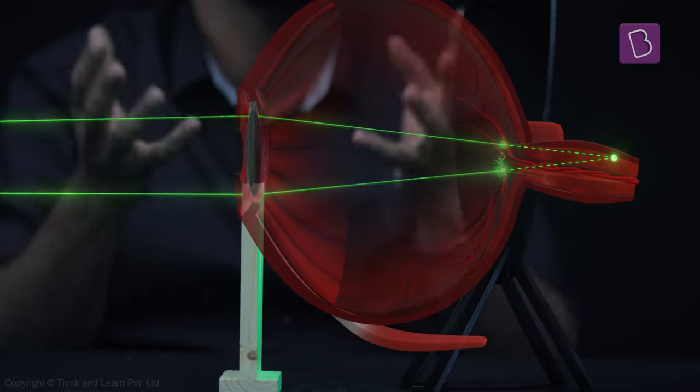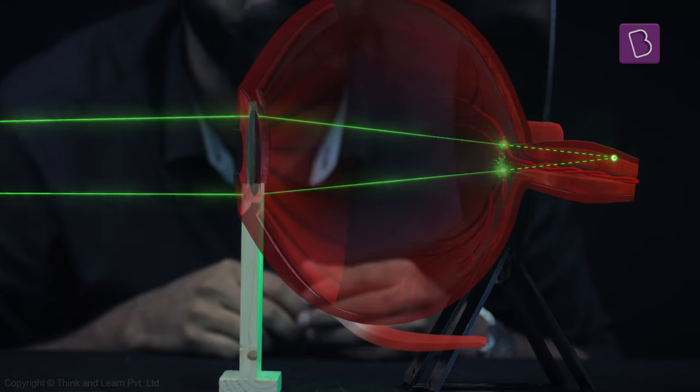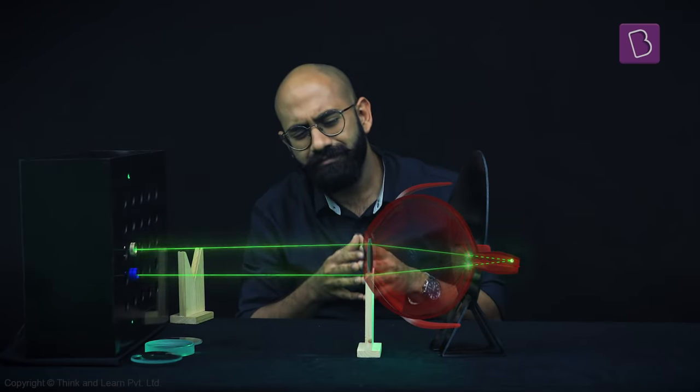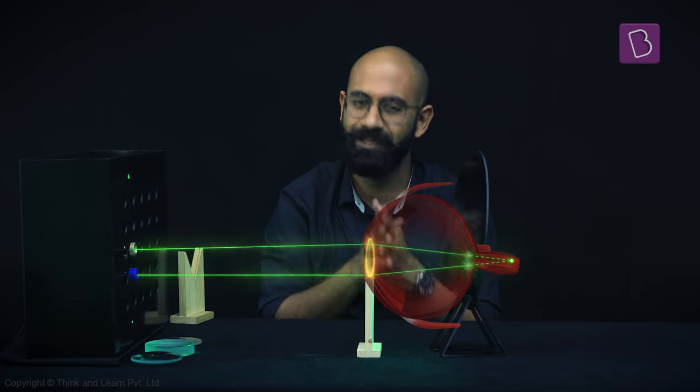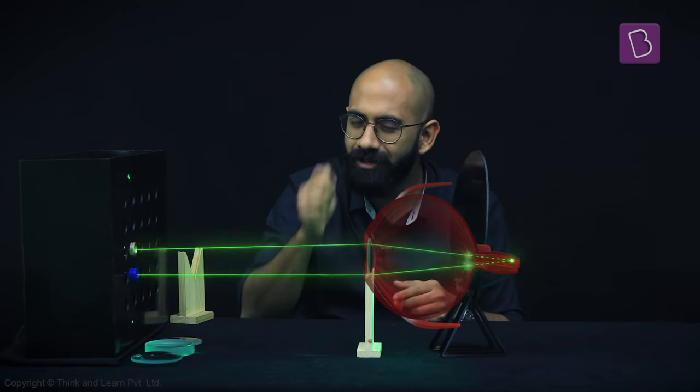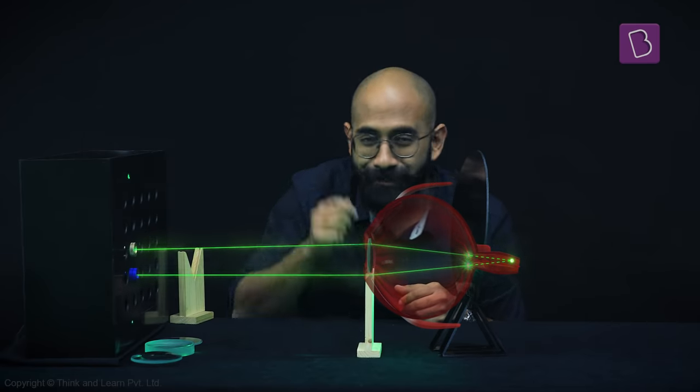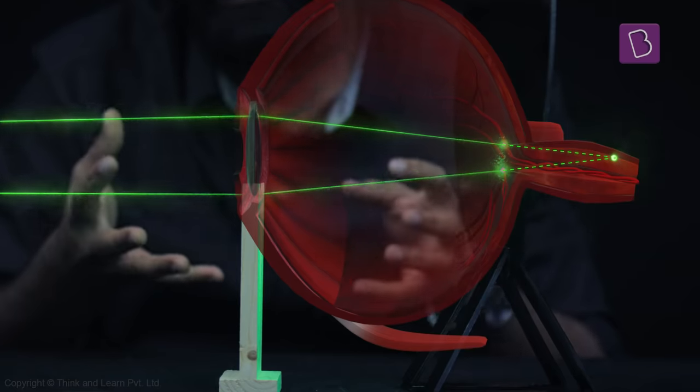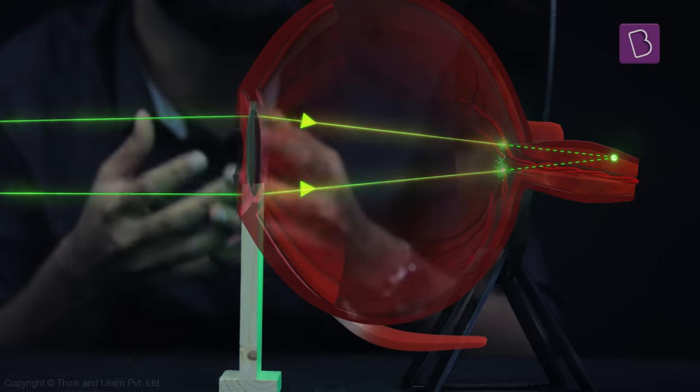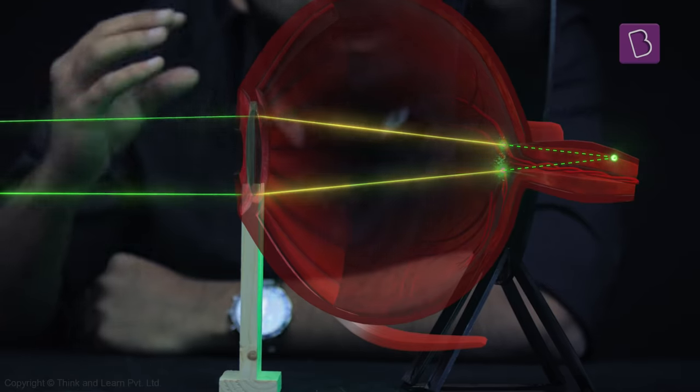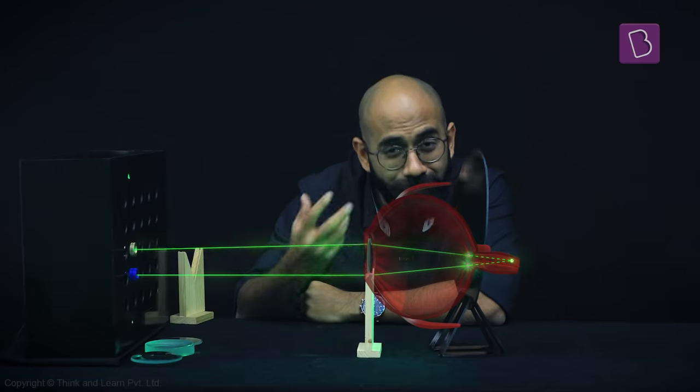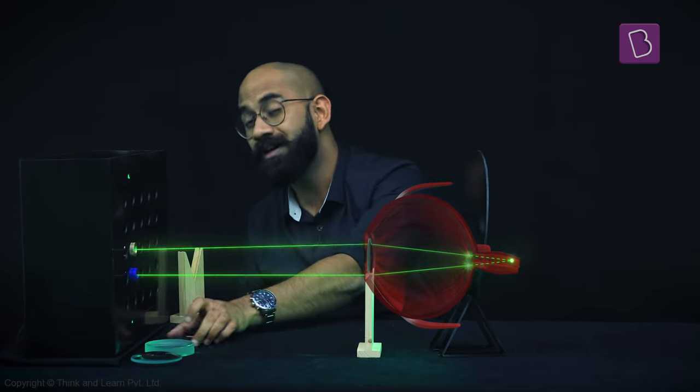And therefore, this person ends up seeing a blurry image. Again, this can happen maybe because the eyeball itself is too small or maybe there is some problem with the eye lens. But how would you correct this? As you can see, the issue is happening because the rays are not getting converged enough. The eye lens requires a helping hand to converge the rays further. So therefore, we introduce a converging lens.